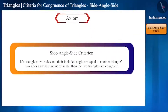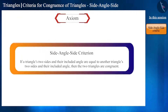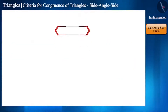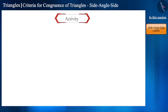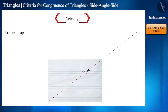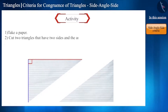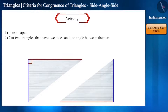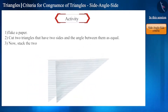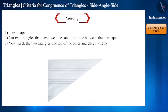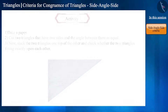The SAS congruence rule cannot be proved with the help of previously known results. Therefore, it is accepted as true in the form of an axiom. Why don't you do an activity? Cut two triangles from a paper such that the two sides and the included angle of one triangle are equal to the two sides and the included angle of the other triangle, and then look at the two triangles by stacking them one on top of the other. Are they fitting exactly one on top of the other? Check!